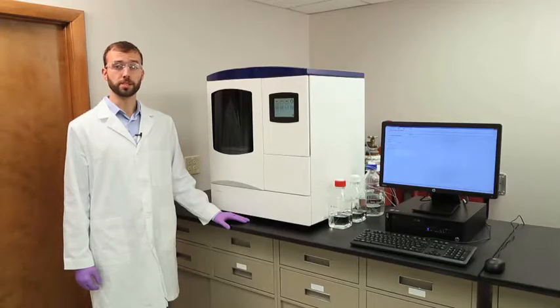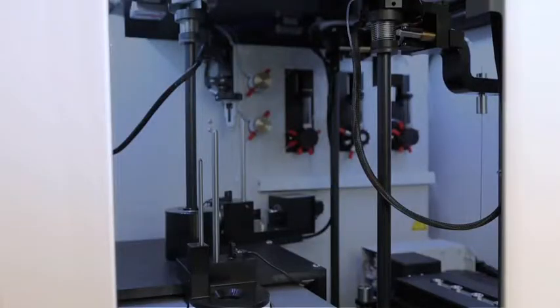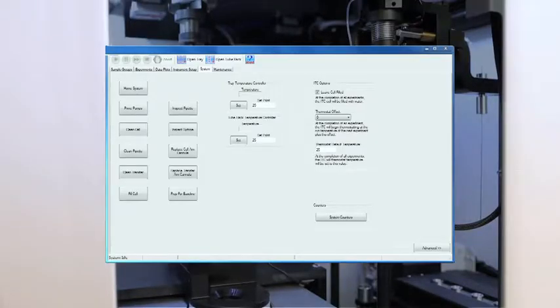I'd like to show you how to manually clean a syringe on the MicroCal ITC automated system. With the MicroCal ITC automated control software open, click the inspect pipette button in the System tab.